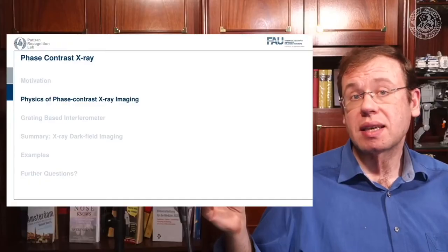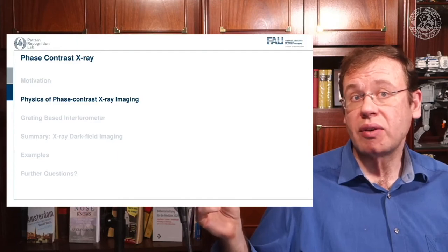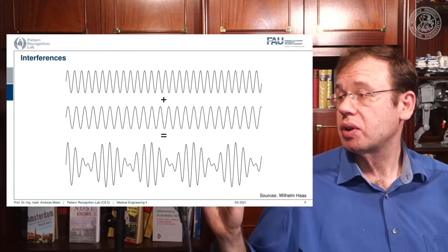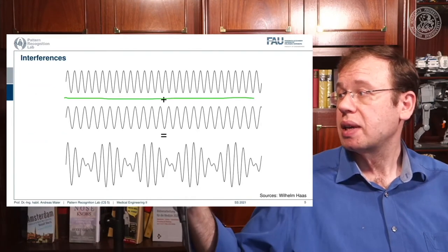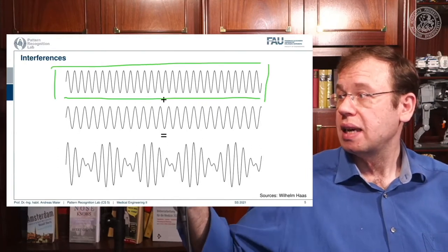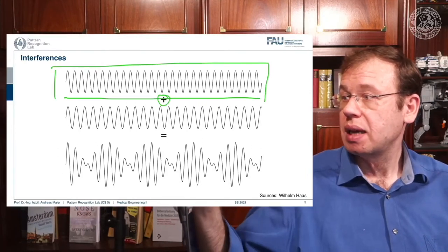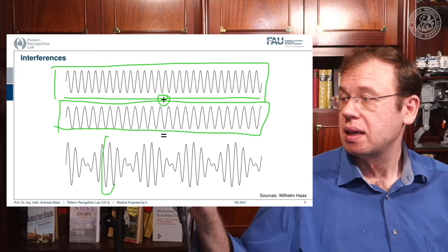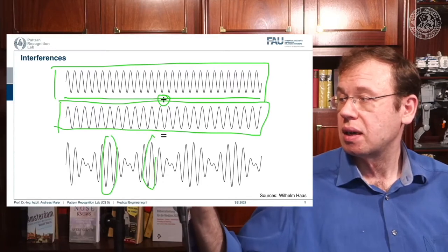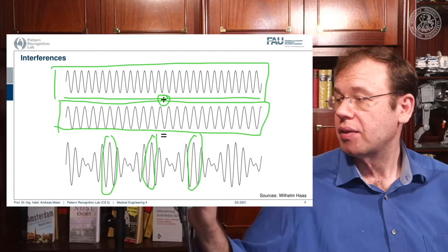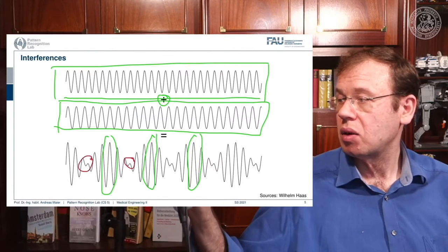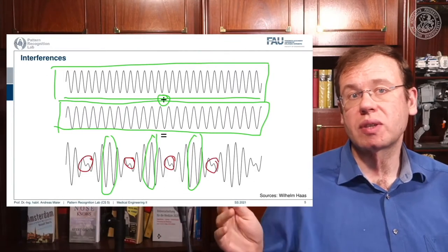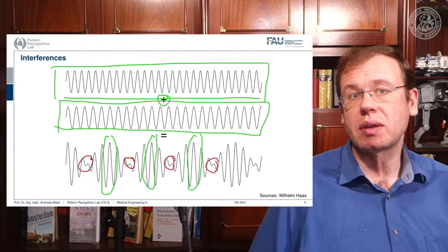Now let's discuss why we can use wave characteristics to get contrast. The key element is interference — we can get interference between two waves when we add them. With two different wavelengths, at some places constructive interference occurs and at others they cancel out, resulting in a loss of signal. Unfortunately, this is not stationary and moves along with the waves, so we don't have stable interference here.